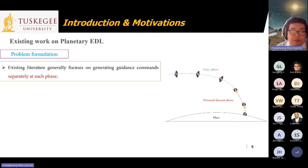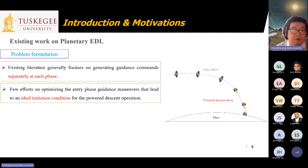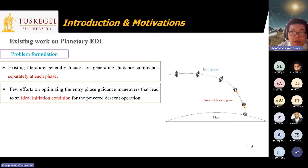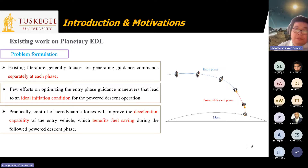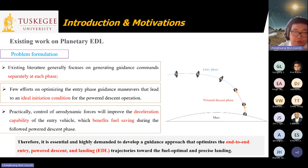This topic is not a new one — there exists much prior literature. However, previously existing research generally focuses on generating guidance commands separately for the entry phase or for the powered descent phase, with few efforts on optimizing the entry phase guidance such that it leads to ideal initial conditions for the powered descent phase. Control of aerodynamic forces will improve the deceleration capability of the entry vehicle, which benefits fuel saving during the subsequent powered descent phase.